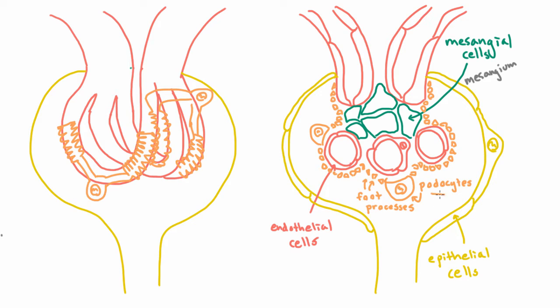Now these podocytes are epithelial cells, just like these epithelial cells that were lining Bowman's space. And let's for one second review what exactly is an epithelial cell.